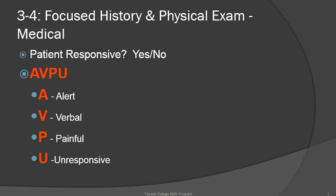Being alert to verbal is a little bit higher than painful and a little bit lower than alert and oriented. If they are alert to verbal, that doesn't necessarily mean they're going to be responding to you appropriately. They may respond inappropriately, they may not say anything coherent, or may give no indication they know what's going on. This is simply them responding to you saying, hello sir, can you hear me?